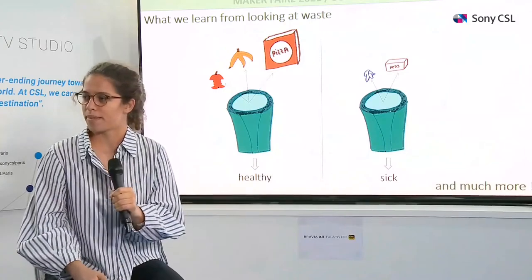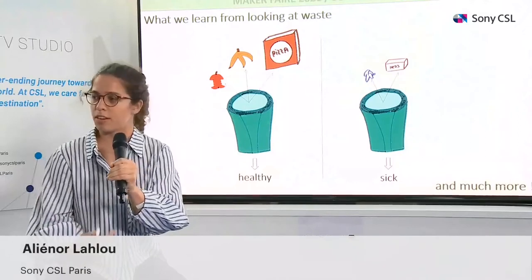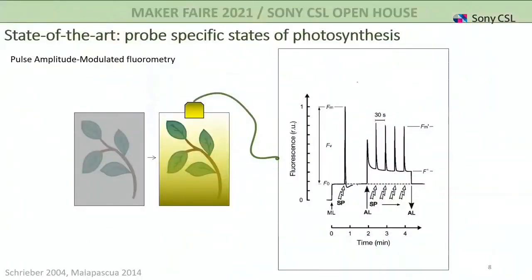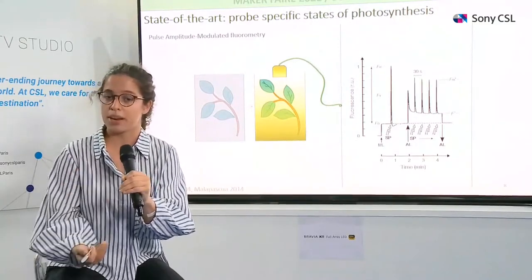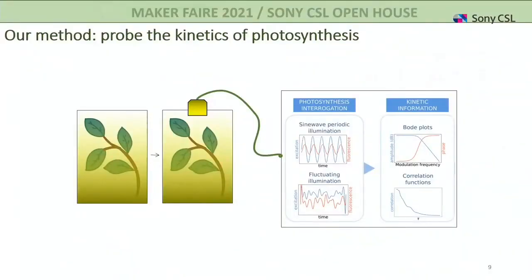You can learn a lot from waste — like looking into a trash can: if you find vegetables, the person is healthy; if you only find tissues and medicine boxes, they are sick. Fluorescence has been used for many years with several existing methods, but we want to introduce a new method. Currently people look at photosynthesis under several stresses and compare fluorescence levels, but we want to study the kinetic dynamic response — how the system responds when excited at different frequencies — to probe specific steps of the photosynthetic chain.